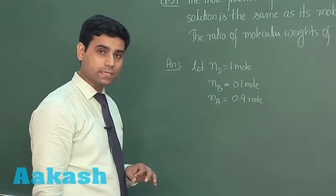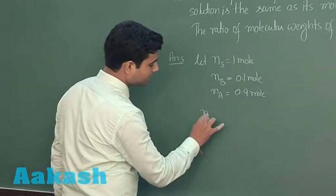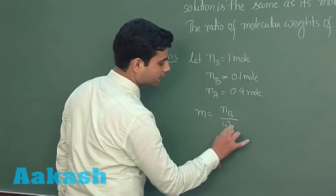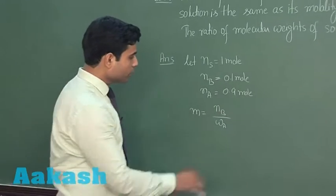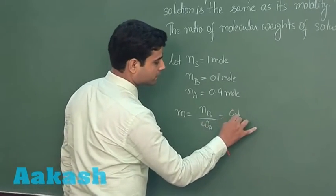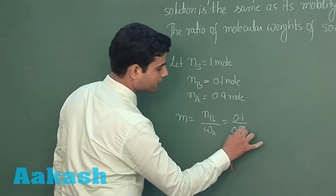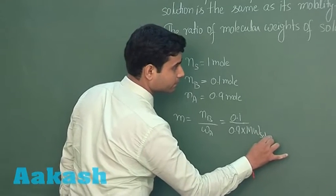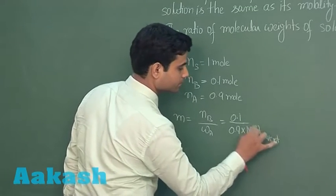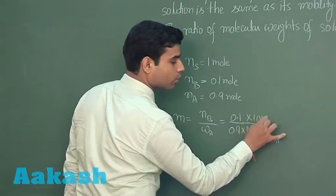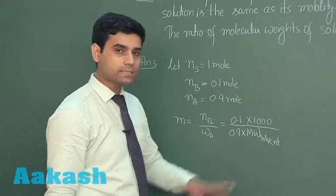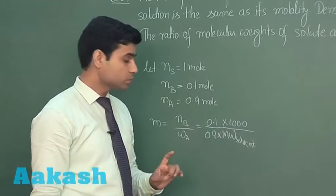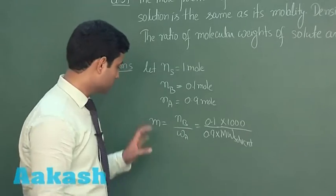Now let us calculate the molality. Molality is the number of moles of solute divided by weight of solvent in kilograms. Number of moles of solute is 0.1, and weight of solvent is 0.9 × M_solvent grams, divided by 1000 to convert to kilograms. So molality = 0.1 × 1000 / (0.9 × M_solvent).